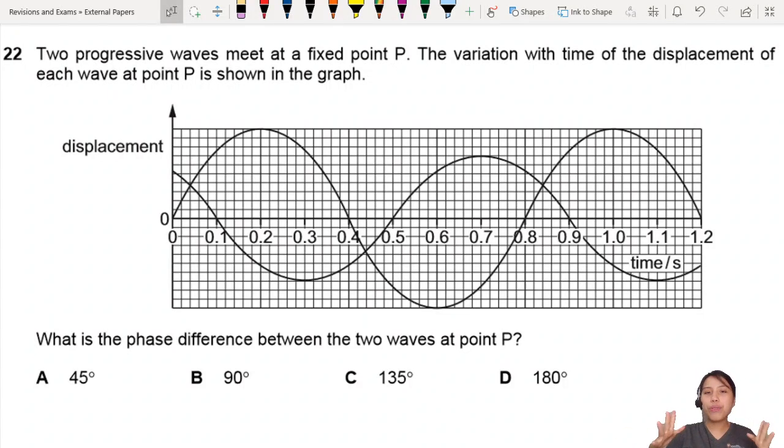You have two progressive waves meeting at a point. This is shown in the displacement-time graph. Note that the x-axis is time—this is important. They ask you, what is the phase difference? When they say phase difference, it's kind of like angle difference. One wave is lagging behind the other wave, and you need to find that in terms of an angle.